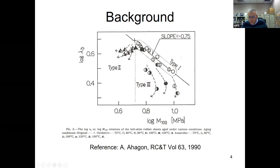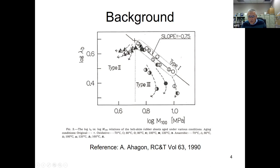Type one is oxidation, type two is pure anaerobic aging. Today we're talking about type three, where there's a combination of oxidation and thermal reversion, using 80 degrees C for our experiments. The 80 degrees C oxidative data and the 80 degrees C anaerobic data — shown by a triangle — will be examined more deeply using our analytical techniques to understand what's happening when both type one and type two aging are combined.